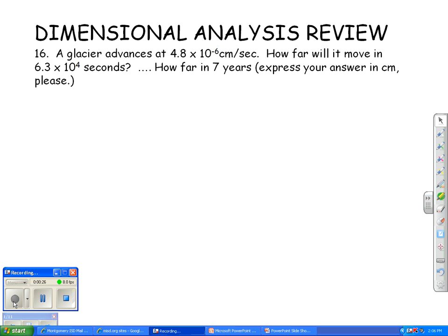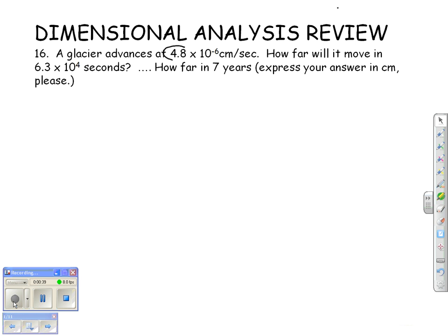So let's get started. We're going to go ahead and do number 16 first, which it has here. And you might want to have your conversion chart. Remember, you'll have that for the test as well. This one says a glacier advances 4.8 times 10 to the negative 6 centimeters per second. We want to know how far it will travel, which is centimeter units, if we're going to give it 6.3 times 10 to the 4th seconds to travel. So that's what we're going to start with.